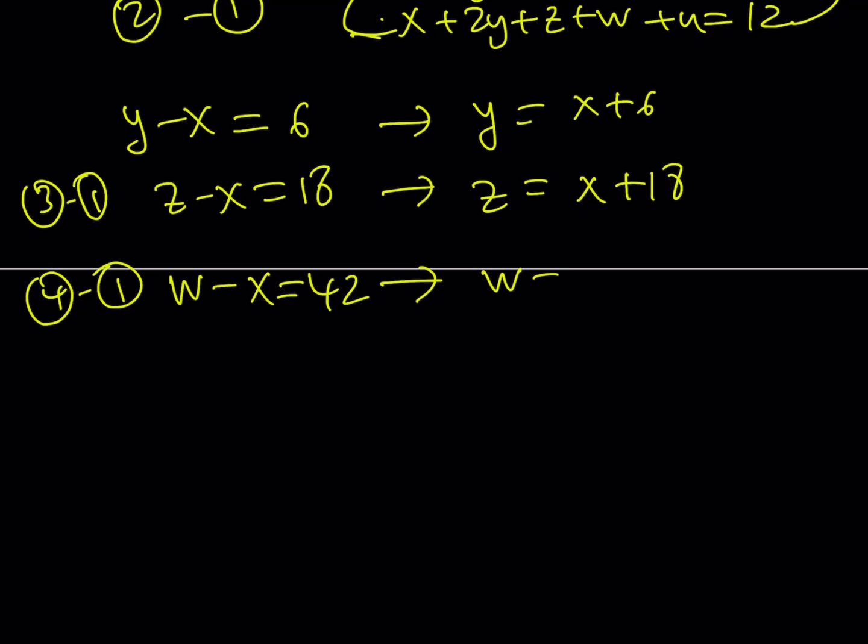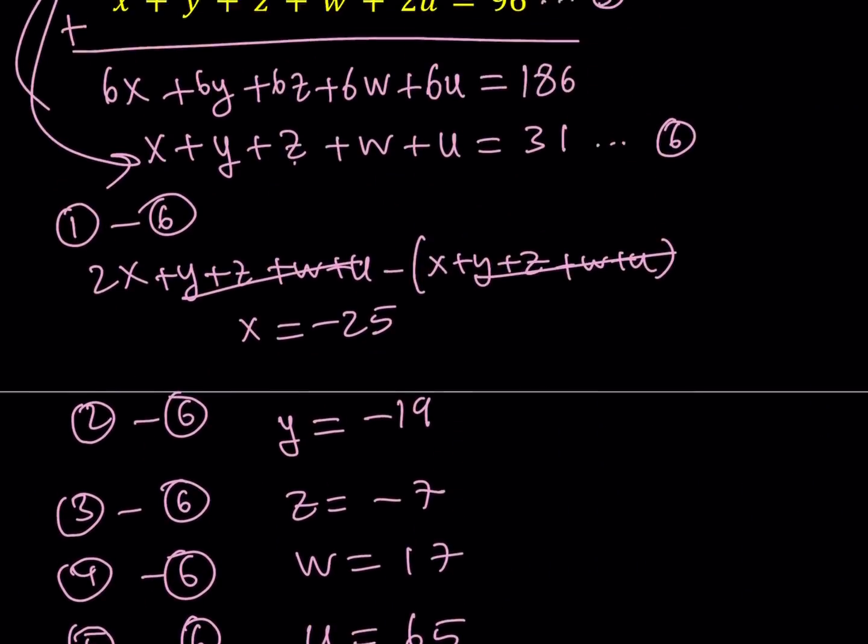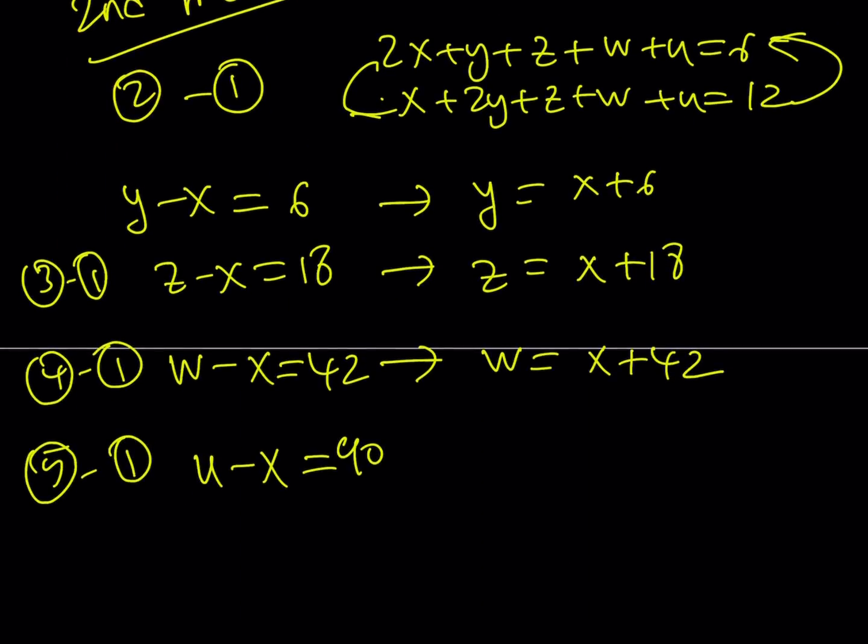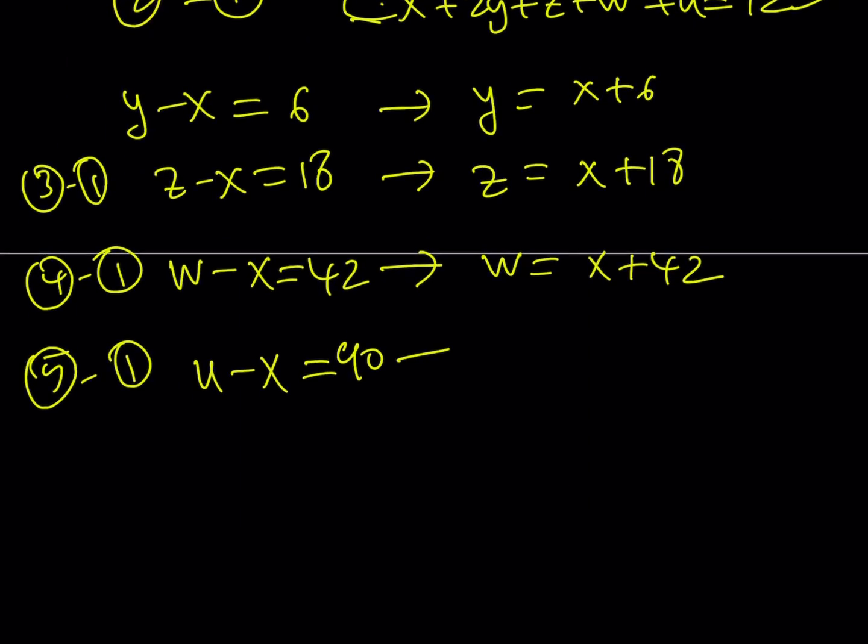Notice that every time I'm getting like a positive answer, which is kind of cool. And then, finally, five minus one should give us W, I mean U, U minus X. And that should equal 90 because notice that five minus one is 96 minus 6. And that basically gives us U minus X. Great. U minus X is 90. So, from here, we get U equals X plus 90.